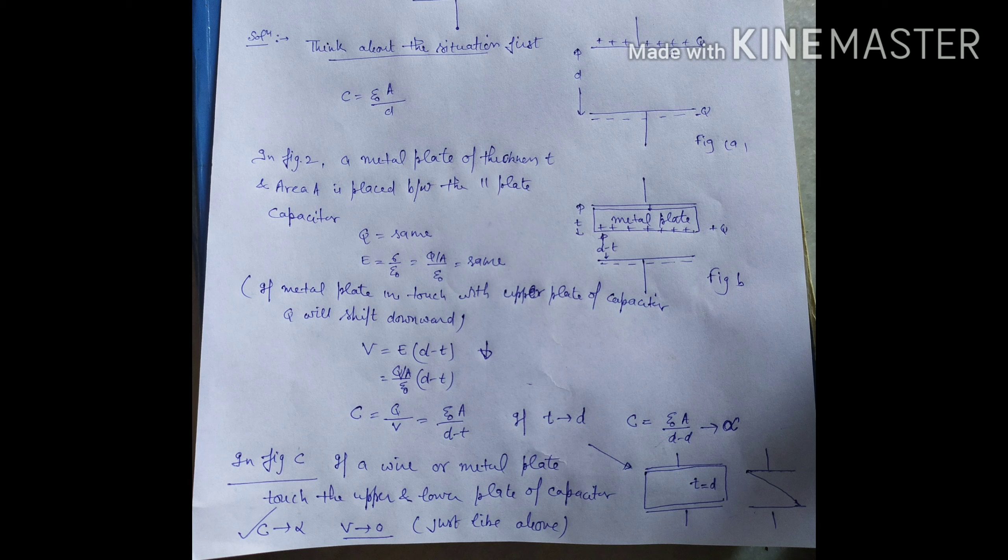In the figure, if we insert a metal plate of thickness T and area A, the charge remains the same. The electrical field inside the metal is zero. Outside in the free space, sigma upon epsilon or Q/A upon epsilon not remains the same.